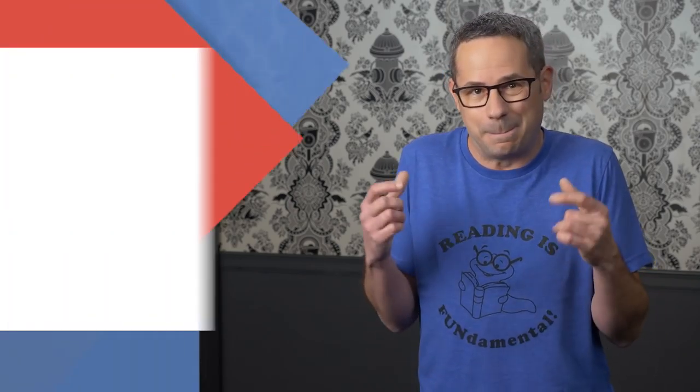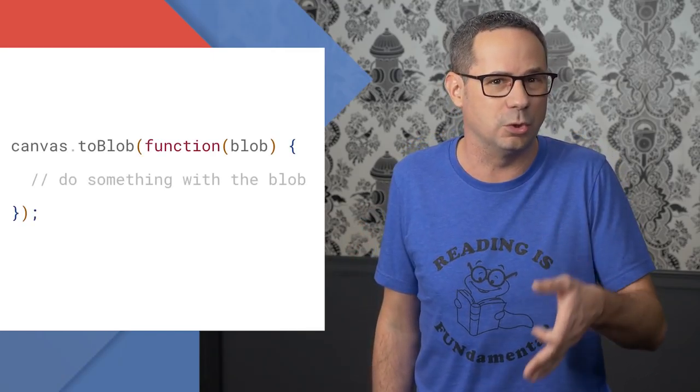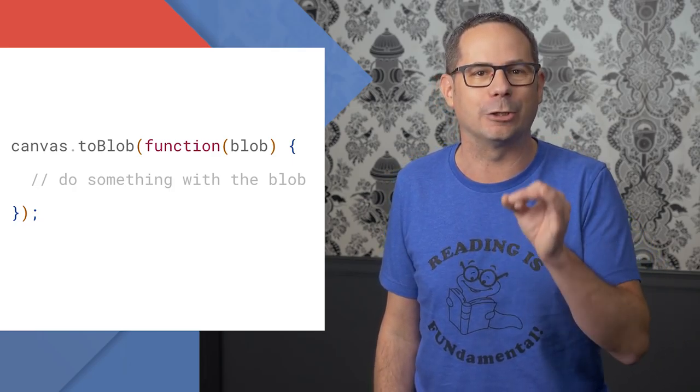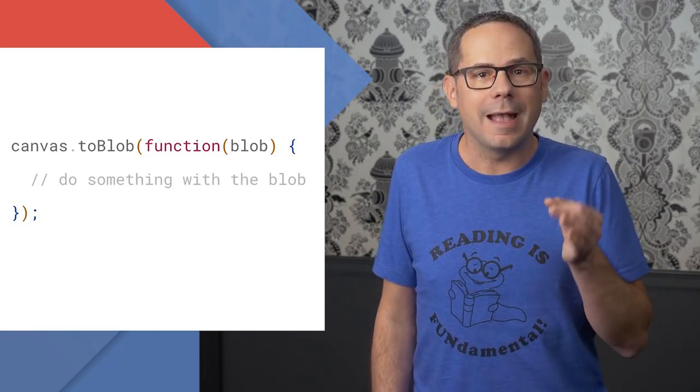The canvas element now supports the toBlob method, which means instead of manipulating base64 encoded strings that you get from toDataURL, you can now work with the encoded binary data directly. It's smaller and tends to fit more use cases than a data URI. Not only can you more easily upload them to your server or store them in IndexedDB for later use, you can draw the image blobs to another canvas context with the Create Image Bitmap API, supported today in Chrome and Firefox.